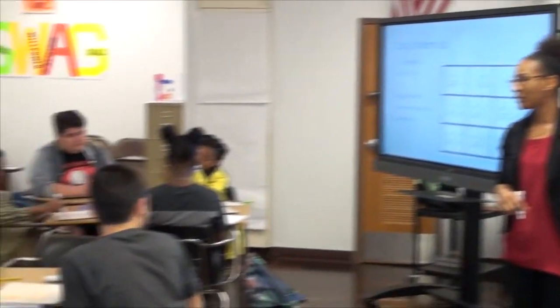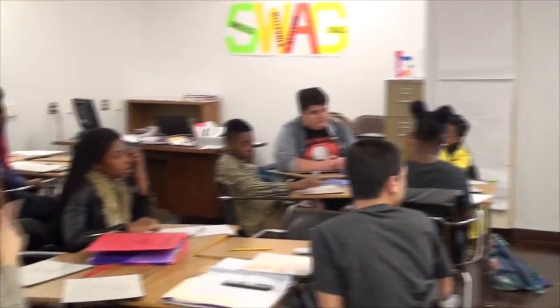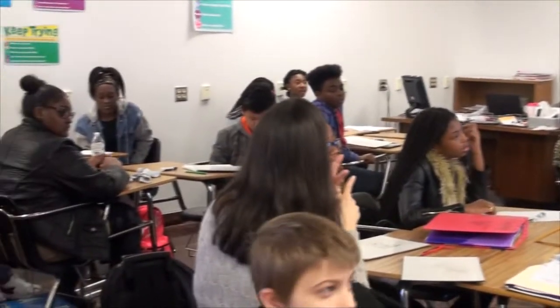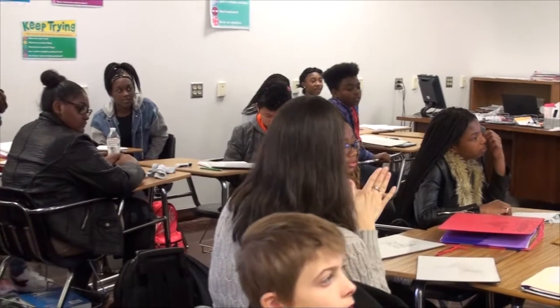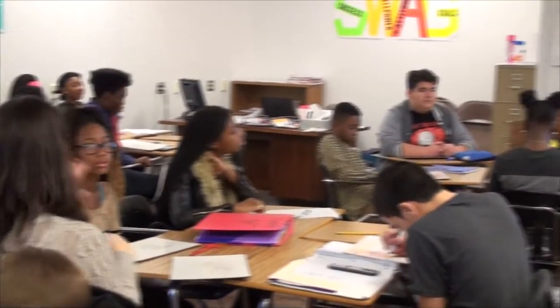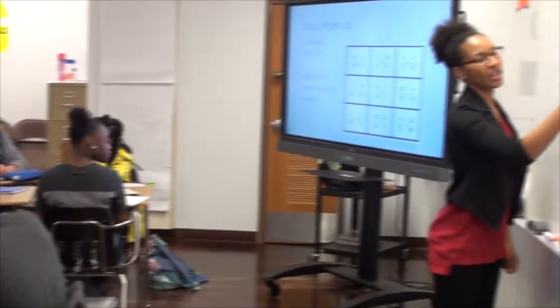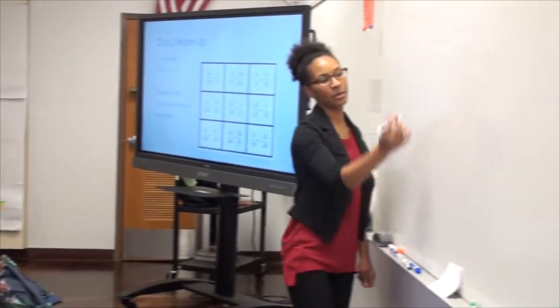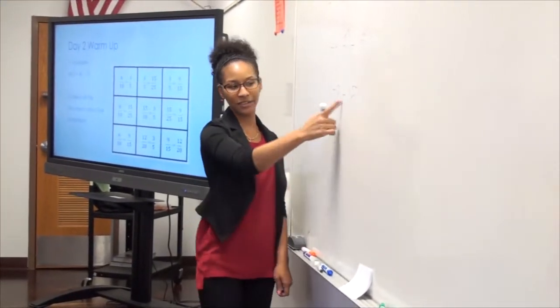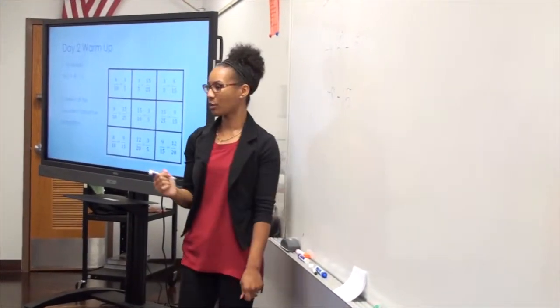It will be negative. Negative times a positive is negative. So 4 times 2 is negative 8, minus 15. I have subtraction now.